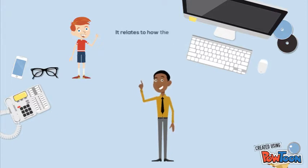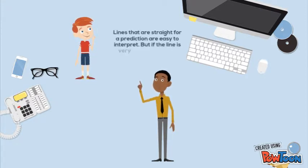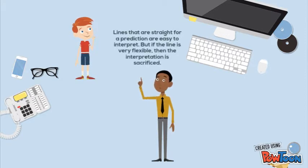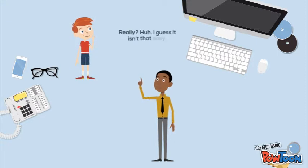It relates to how the line that was made for our prediction loses interpretation. Lines that are straight for a prediction are easy to interpret, but if the line is very flexible, then the interpretation is sacrificed. We have to be careful how much flexibility we allow for our predicting line. Really? I guess it isn't that easy.